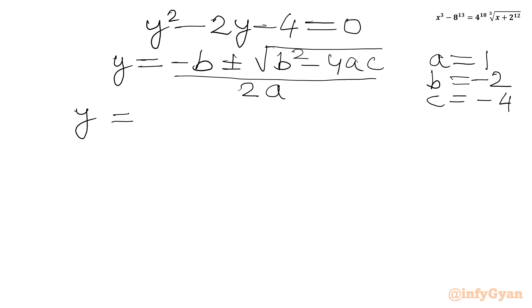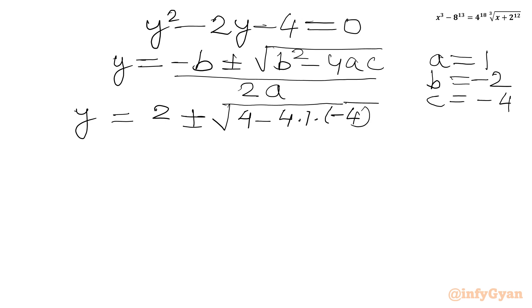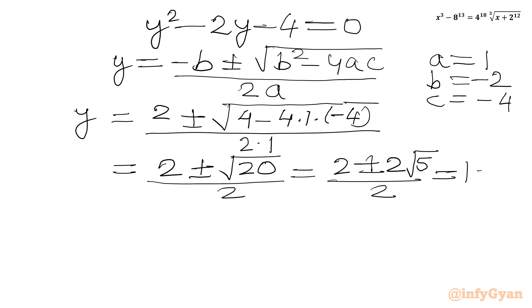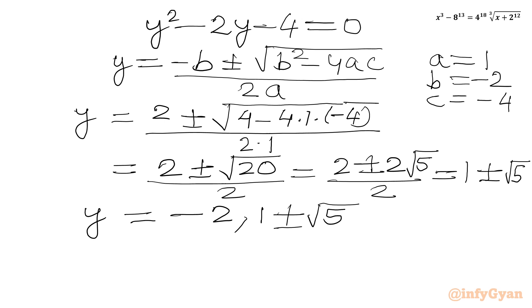Applying the values: y = (2 ± √(4 + 16)) / 2 = (2 ± √20) / 2 = (2 ± 2√5) / 2 = 1 ± √5. So we have three values of y: y = −2, y = 1 + √5, and y = 1 − √5.